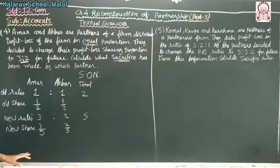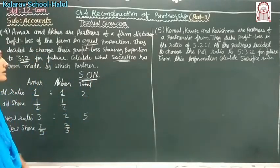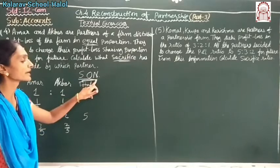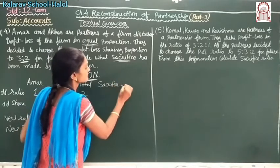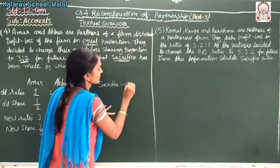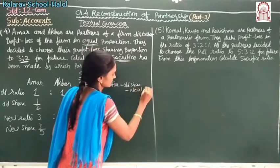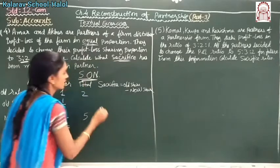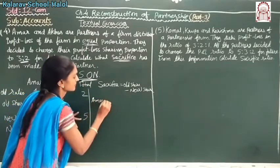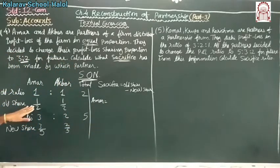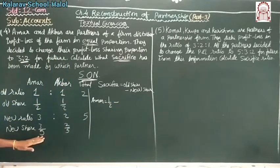Now from this we have to calculate the sacrifice ratio. The sacrifice ratio formula is: sacrifice equals old minus new. Let's find Amar's sacrifice. Amar's old share is 1 upon 2, minus new share 3 upon 5.